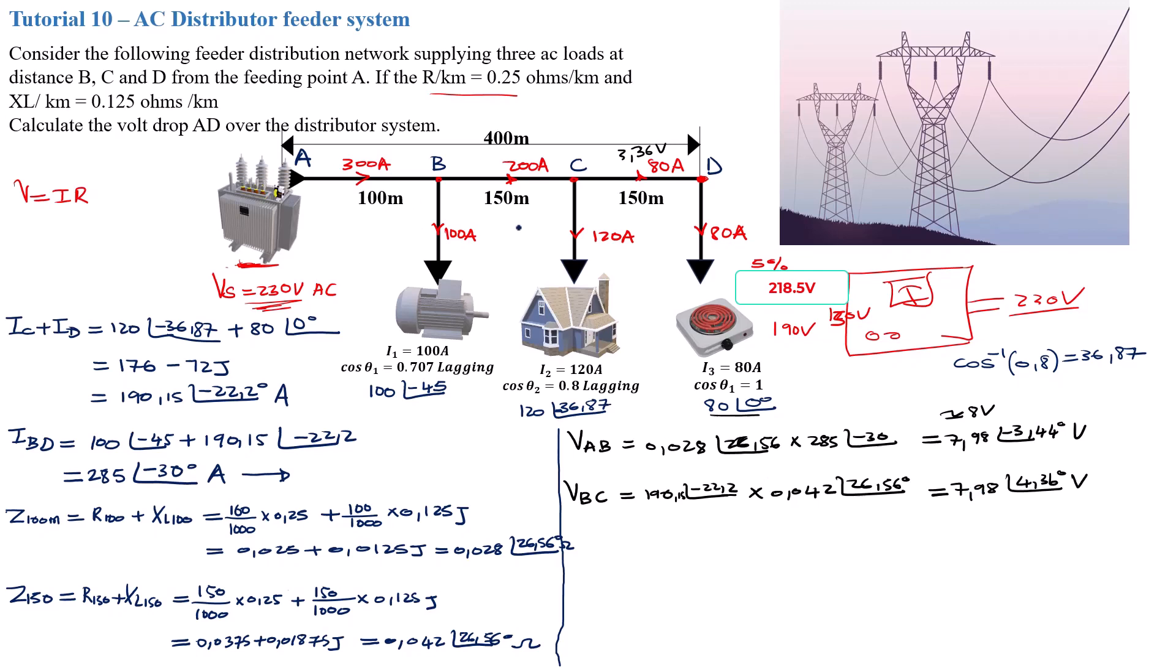Now we can go ahead and do the last part. That will be V_CD. We know what's the current in this last part, it's 80. That will be 80 with a zero degree angle. Our impedance is the same, 0.042 angle 26.56 degrees. And that will give us a voltage drop of 3.36 with an angle of 26.52 degrees volt. So you've got about 3.36 volts here.